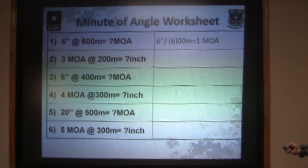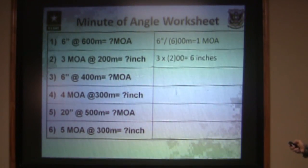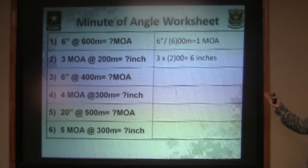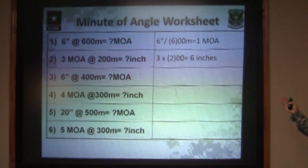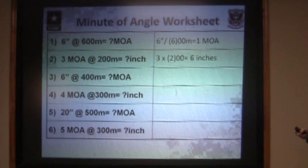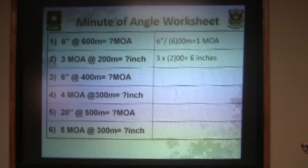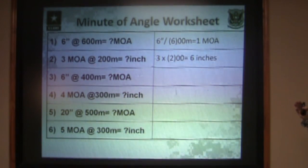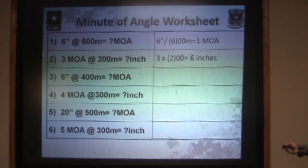Three MOA — three minutes of angle — at 200 meters equals how many inches? You take your three MOA, multiply it times the two of your 200-meter distance, and it gives you the number of inches on target. So three minutes of angle at 200 meters equals six inches on target downrange.